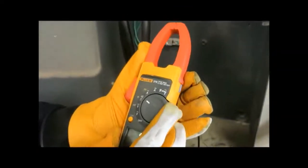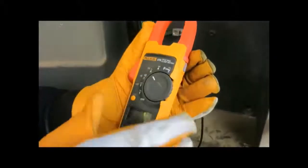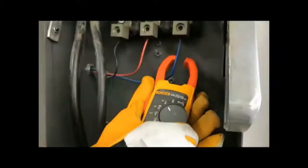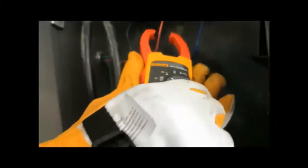First set the clamp-on multimeter to the alternating current amp reading mode. Next, place the clamp around one of the legs of the three phases and record each measurement.